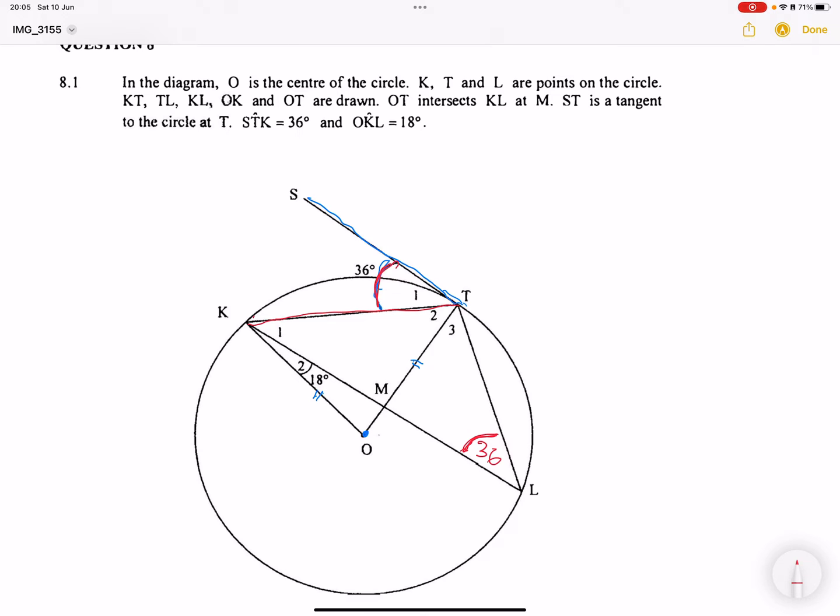We're given that OKL, that small angle inside there, is 18 degrees. Before we start answering the questions, I want us to quickly look at what other information we can get from this. First of all, I've already shown you tan-chord theorem in this case. Through the tan-chord theorem, we know that L will be equal to that T1.